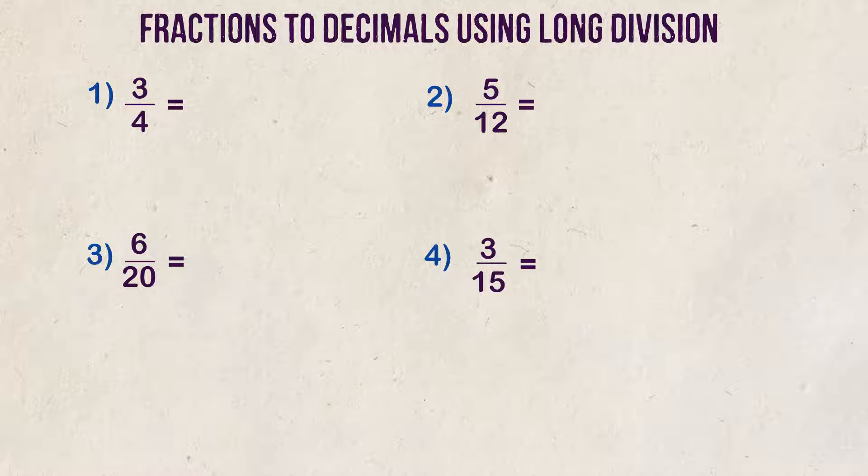Example one: convert three-fourths into a decimal. The first step in converting fractions to decimals is to set your problem up properly. We will start by dividing our numerator by our denominator, so we set the problem up like this. Four is what they call the divisor and three is called the dividend in a long division problem. We know that four will not go into three.